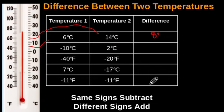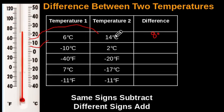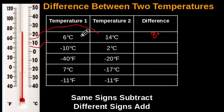For the first example, we have six degrees Celsius and 14 degrees Celsius. Same signs — they're both positive. So you subtract the lesser temperature from the bigger temperature. That will be 14 minus six, which gives us eight — which was what we got reading the thermometer.